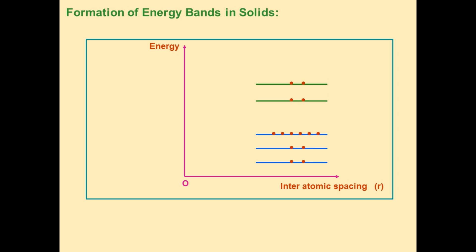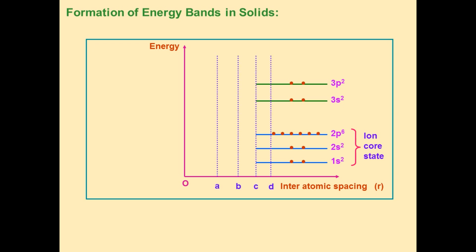Consider a silicon atom. The atomic number of silicon is 14. Its electronic configuration is 1s2, 2s2, 2p6, 3s2, and 3p2.